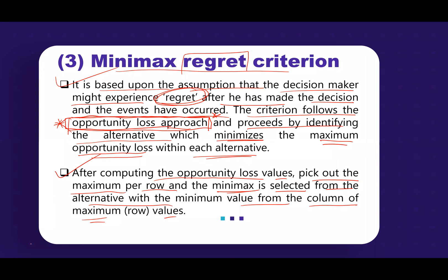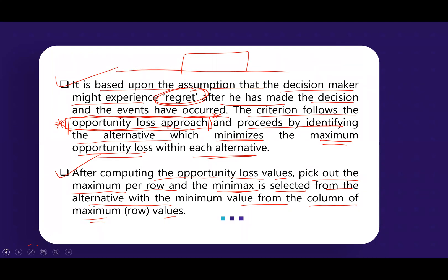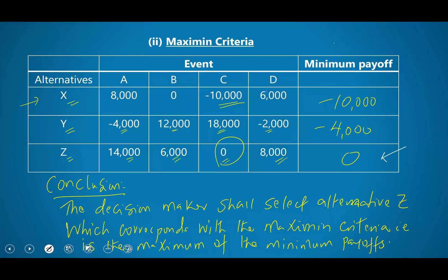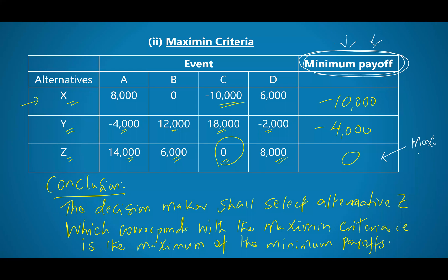Before I go there, I want to make a correction — I think I had wrongly looked at this table. This was okay because I had labeled this one 'minimum payoff.' What you do is show the minimum payoffs here, identify them, and then select the better one — the maximum. This is the maxi of the mini, max of the min.